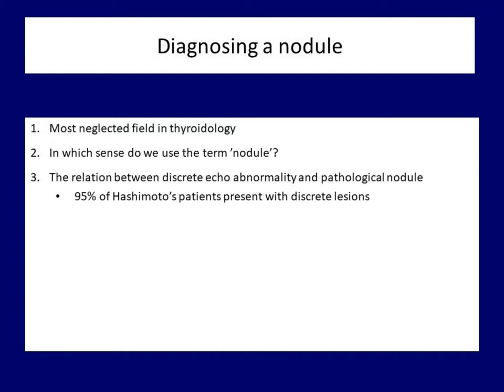In everyday practice, this is the least resolved problem, with serious implications for the investigation procedure as a whole. What is the relation between a discrete echo abnormality and the pathological nodule? In what sense does the ultrasound examiner use the term 'nodule'? How do we differentiate discrete lesions found in more than 90% of Hashimoto's thyroiditis? We have no answers, as we have not yet fully addressed this question.